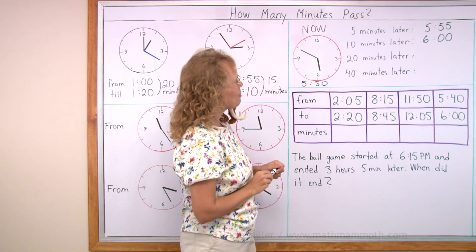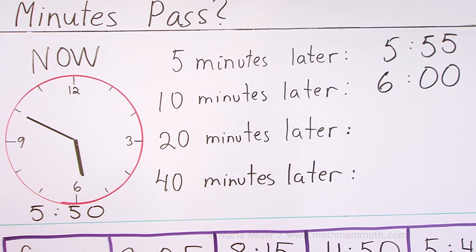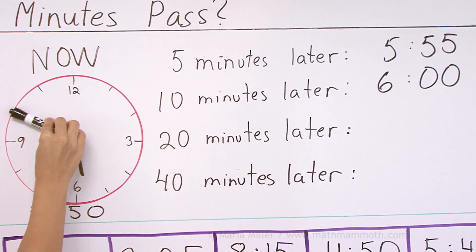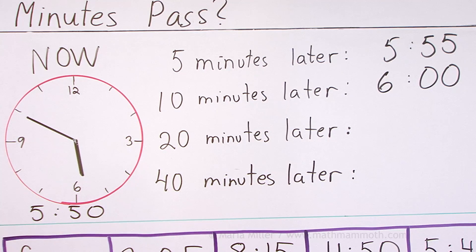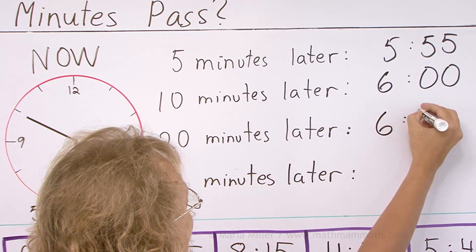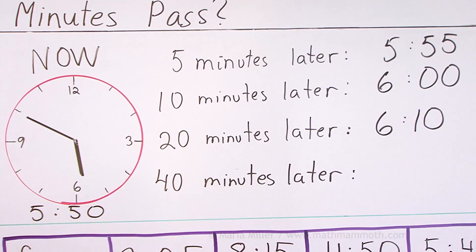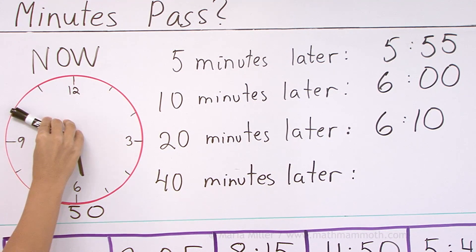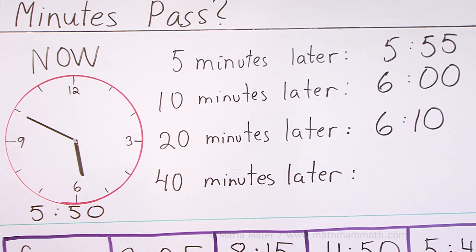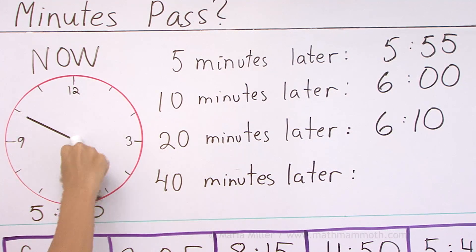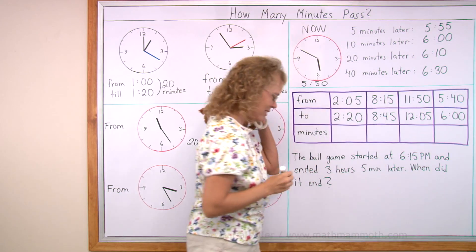20 minutes later, okay? We could just take the 6 o'clock and go 10 minutes more, right? Because if it is here and it moves 20 minutes, first 10 minutes till 6 o'clock, and then another 10 minutes till 10 past 6 or 6:10. 40 minutes later, again, you can imagine moving the minute hand here. It first moves 10 minutes till 6 o'clock, and then it still needs to move 30 minutes, right? 30 minutes over there or 6:30. Right, Matthew?